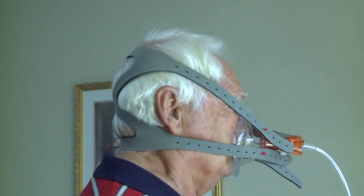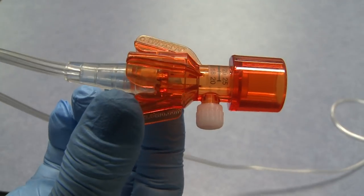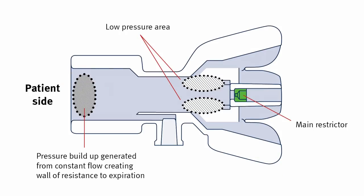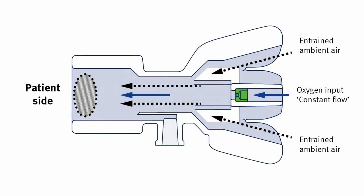The continuous positive airway pressure is created when the vectored flow valve accelerates the oxygen flow, causing turbulence at the restrictor exit. This in turn causes the pressure to drop and allows ambient air to be entrained into the chamber and mixed with oxygen. By varying the oxygen flow through the vectored flow valve, the baseline pressure can be raised or lowered to maintain a constant airway pressure.